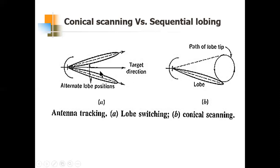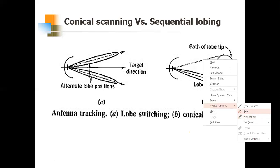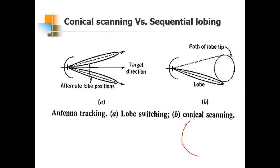So instead of switching in four different directions — right, up, left, down — using four feed horns from a single antenna, we can use one feed horn. So as I drew in the previous figure, one parabolic antenna with the feed squinted off axis. And then it will keep rotating. So this is the path of the lobe. We have one feed horn in a single antenna, unlike sequential lobbing where we have four feed horns for four different positions. So one feed horn which is squinted off axis — that is conical scanning.